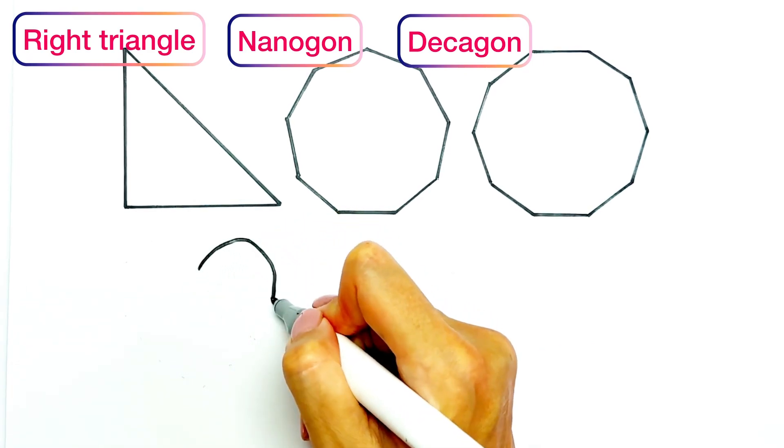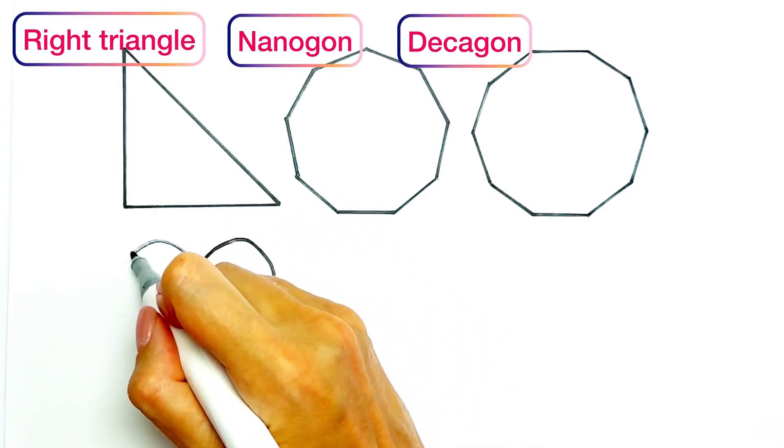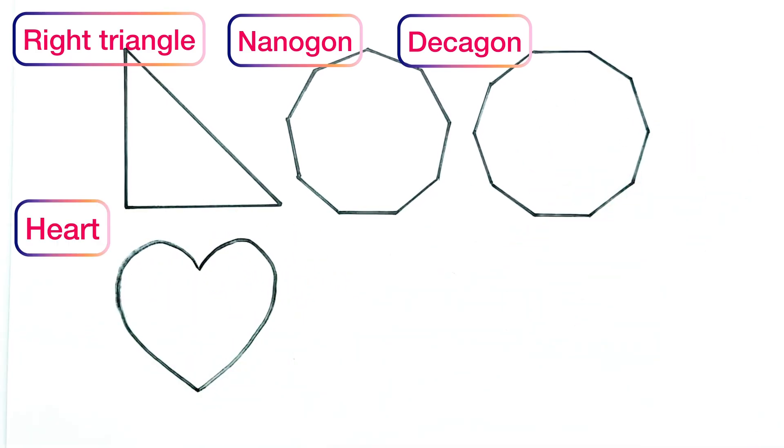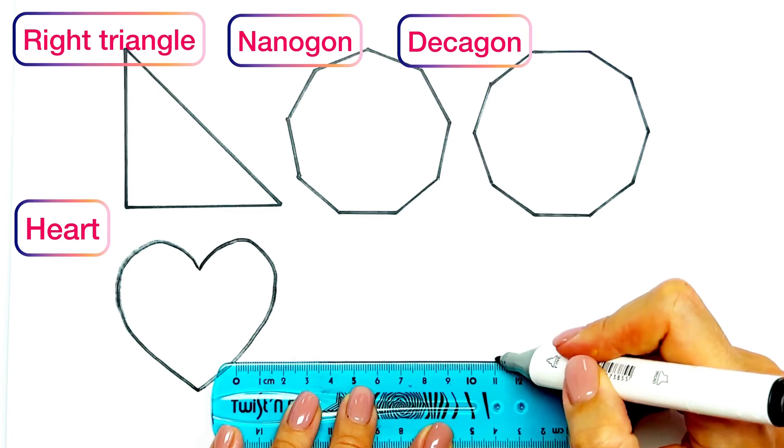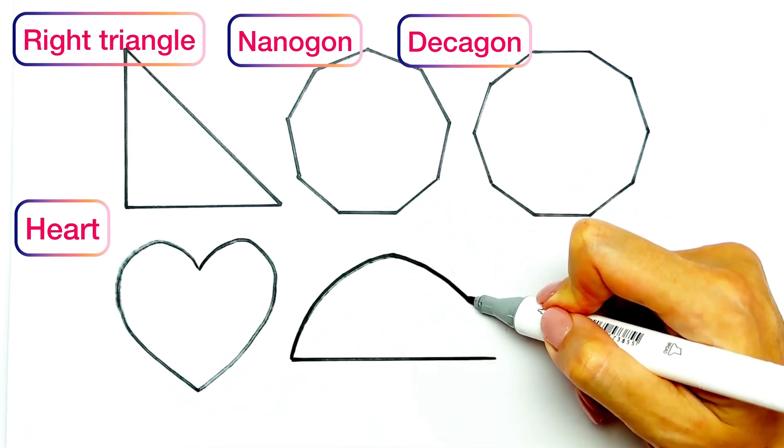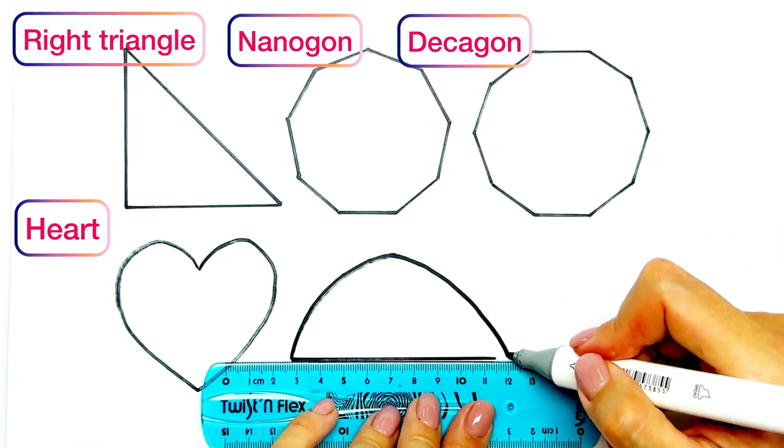The next one is heart. The next one is semicircle. Semicircle, it's like circle, but divided into parts.